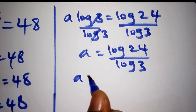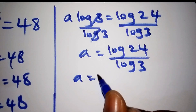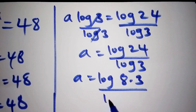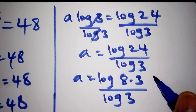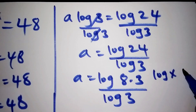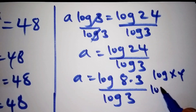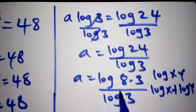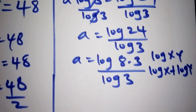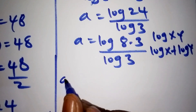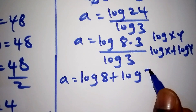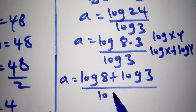So now for a, when we factorize this number, the log of 24 can also be written as the log of 8 multiplied by 3, all over the log of 3. Suppose we have the log of x multiplied by y — that can also be written as the log of x plus the log of y. So we can rewrite a as the log of 8 plus the log of 3, all divided by the log of 3.